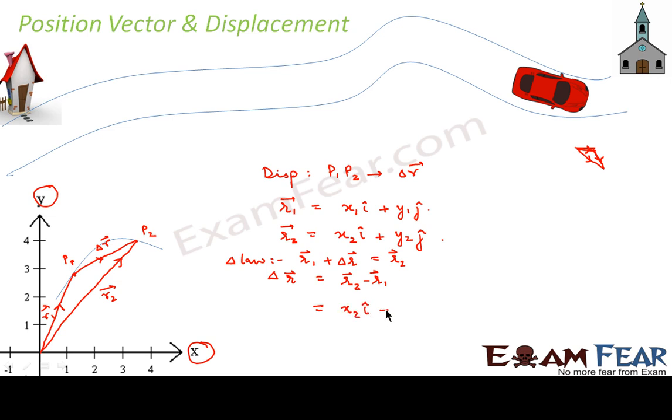R2 is x2 i cap plus y2 j cap minus R1 is x1 i cap minus y1 j cap. Now you take all the i components together and all the j components together. So you get x2 minus x1 i cap plus y2 minus y1 j cap.